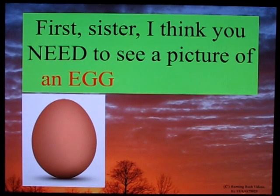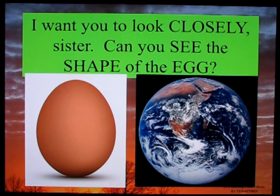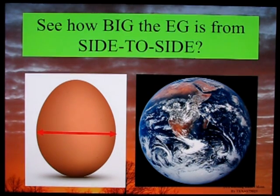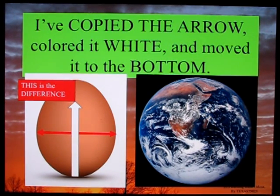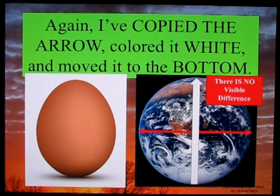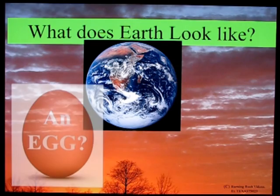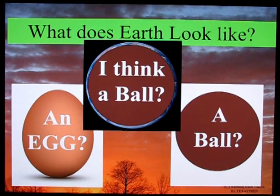First, sister, I think you need to see a picture of an egg and a ball. I want you to look closely, sister. Can you see the shape of the egg? See how big the egg is from side to side? I've copied the arrow, colored it white, and moved it to the bottom. You can see the difference between the two axes. Now let's do the same thing with the earth. See how big the earth is from side to side. Again I've copied the arrow, colored it white, and moved it to the bottom. There is no visible difference. Please let me make the pictures even simpler — what does the earth look like? An egg or a ball? I think a ball.